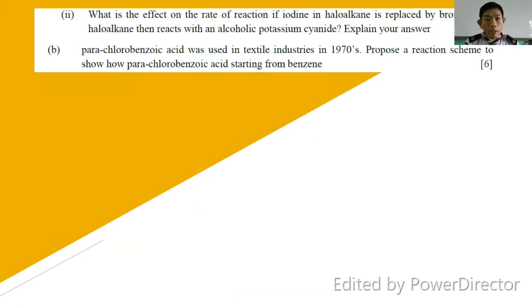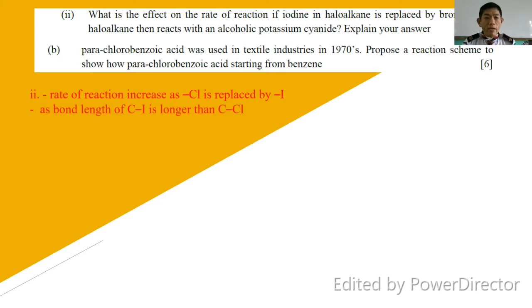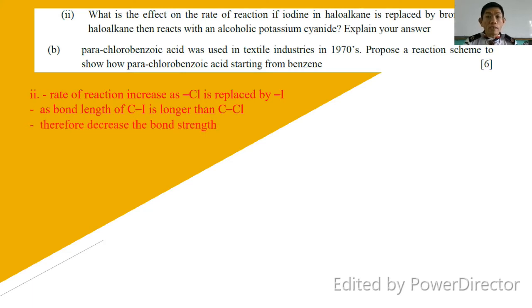Question 3b: what is the effect on the rate of reaction if chlorine in the haloalkane is replaced by iodine, and the haloalkane then reacts with alcoholic potassium cyanide? The rate of reaction increases as C-Cl is replaced by C-I, since the bond length of C-I is longer than C-Cl. Therefore, the bond strength decreases, and the rate of reaction is higher.